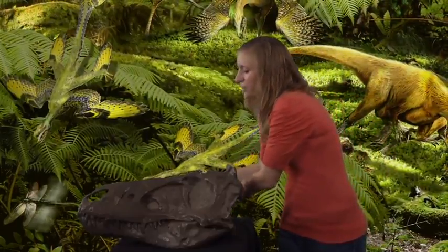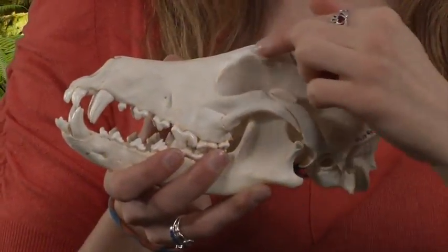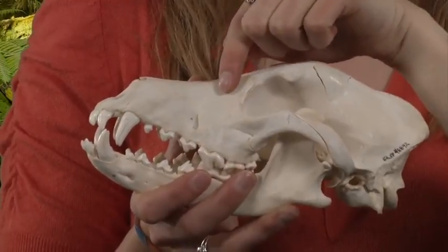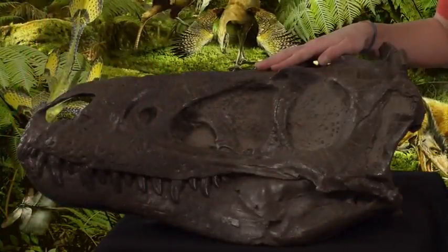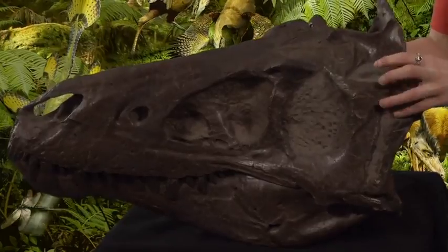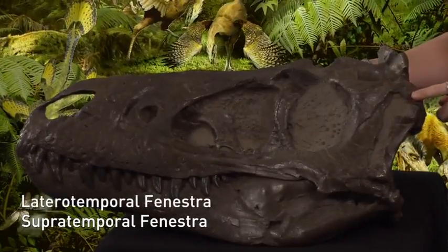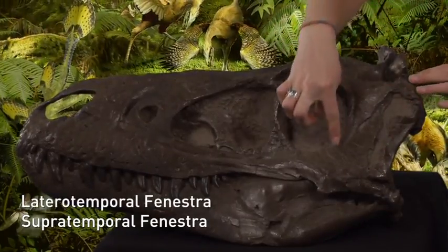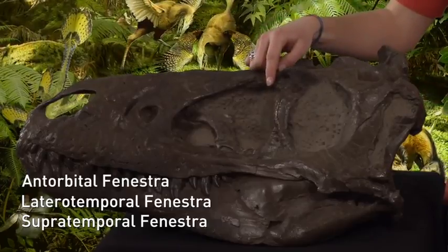Skulls of mammals, like this coyote, only have one fenestra behind the orbit, located here, with this being the orbit. And they have no fenestrae in front of the orbit. Also located at the front of the skull are the nares. However, this small tyrannosaur skull has two holes behind the orbit: the first being the supratemporal, and the other the lateral temporal fenestrae. They also have one in front of the orbit — the antorbital fenestrae. In front of the skull is the nares. The brain is housed in a box called the brain case, with openings for nerves that send messages to the rest of the body, including the spinal cord. Teeth can be found in the upper and lower jaws.